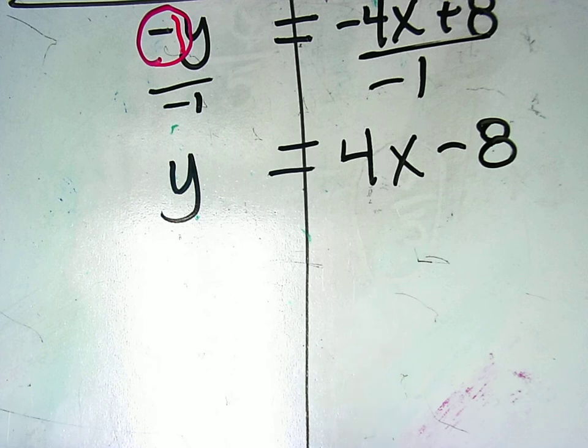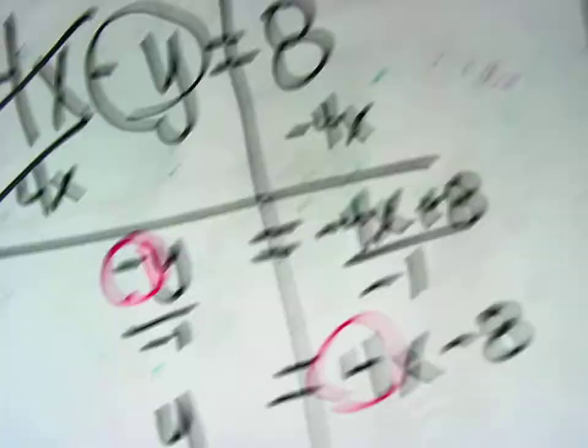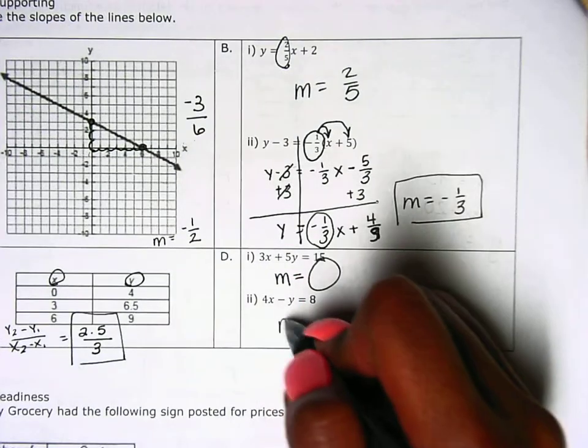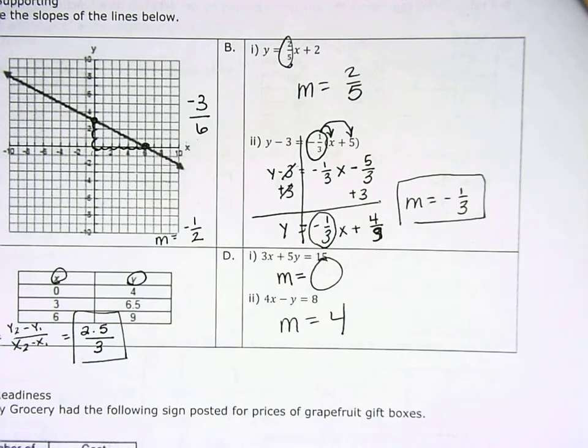So what's my slope? 4. So in our original problem, m is equal to 4.